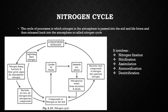The plants absorb the nitrogen compounds from the soil through their roots and convert this nitrogen into plant proteins. These plant proteins are eaten by animals, which convert them into animal proteins and other organic compounds to make up their body. The utilization of nitrogen in the body of plants and animals is called assimilation.